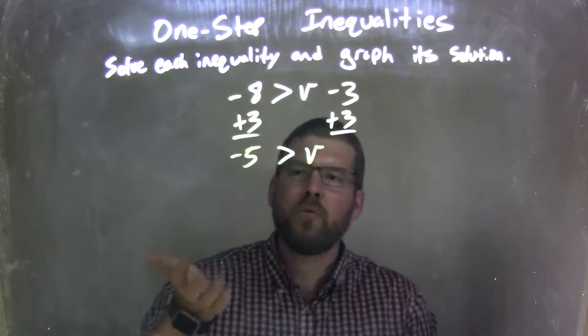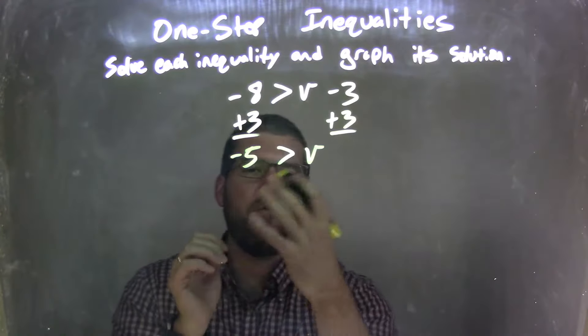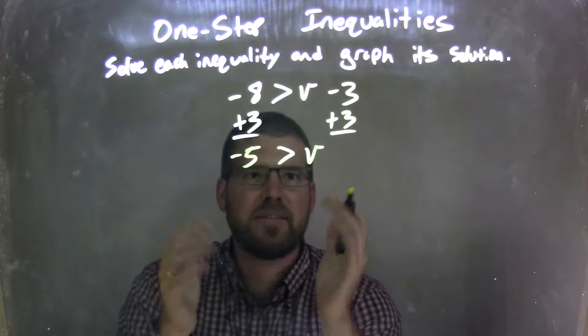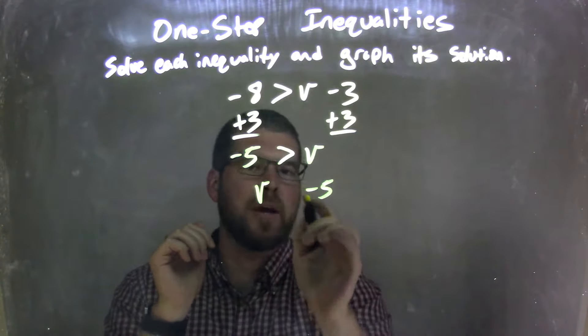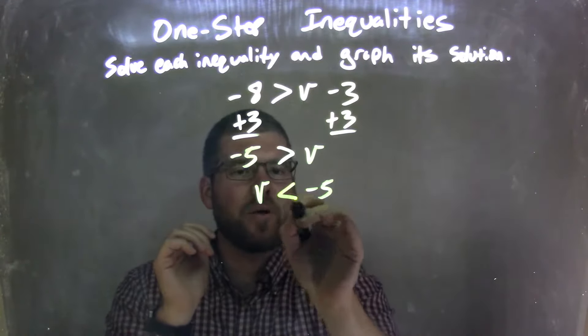And so I want to rewrite that, though. You know, v is already isolated. I want to have v come first, because that looks nice and neat. So I have the v come first of the negative 5 over here, so I'm flipping them. And if I'm flipping it, I'm going to flip the inequality as well.